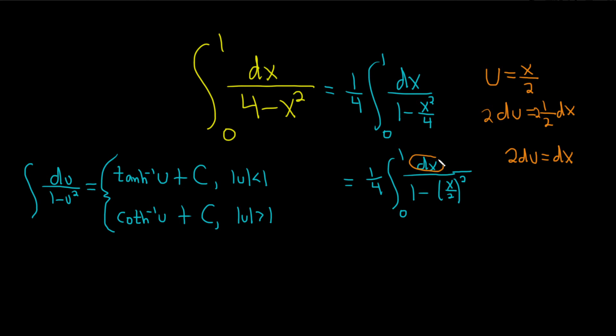So now we will replace the dx with 2 du. And in fact, I'll pull out the 2, so I'll write it like this: 2 fourths. Here we have our du, right? Because dx is 2 du, that's all we've done so far, over 1 minus u squared.